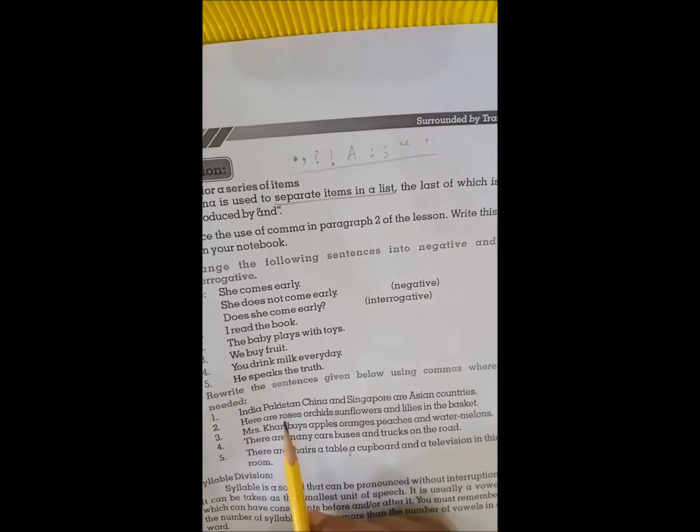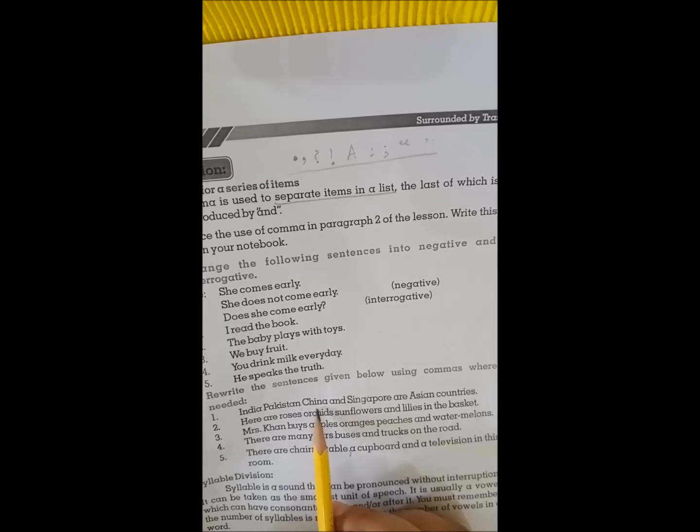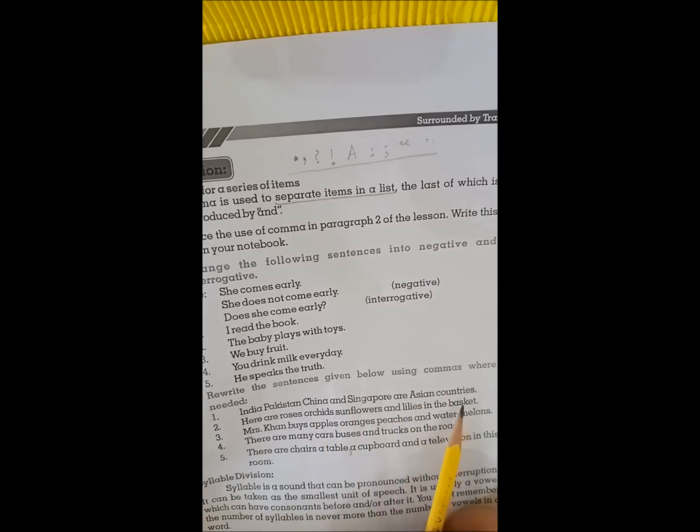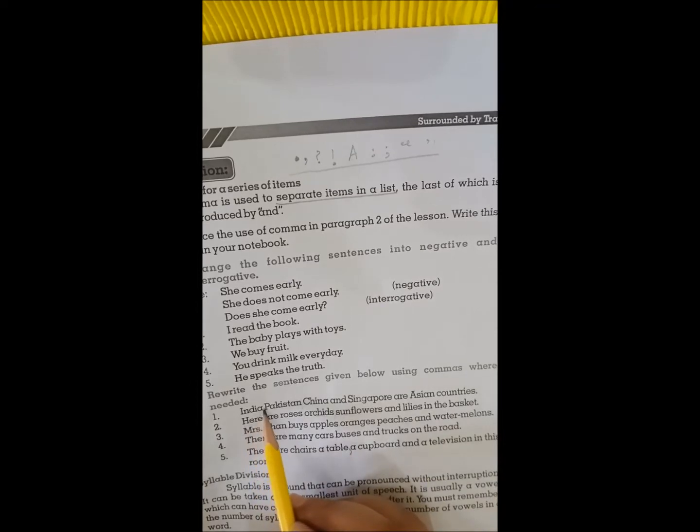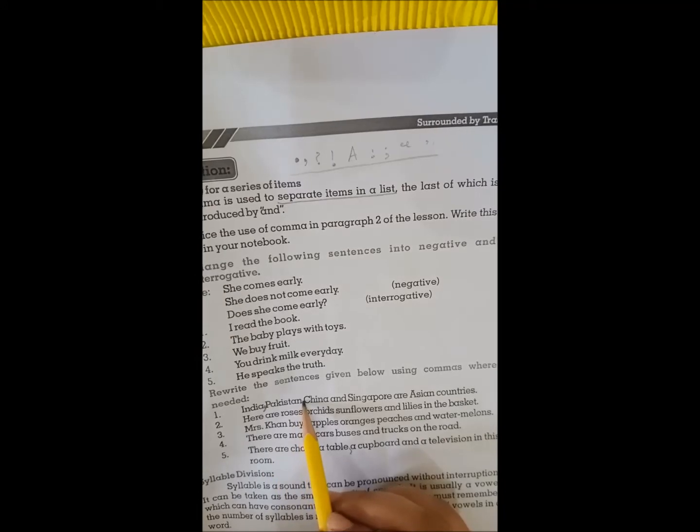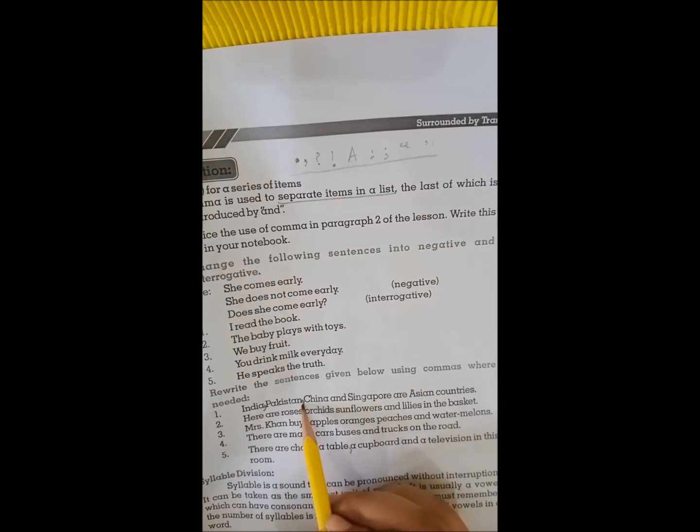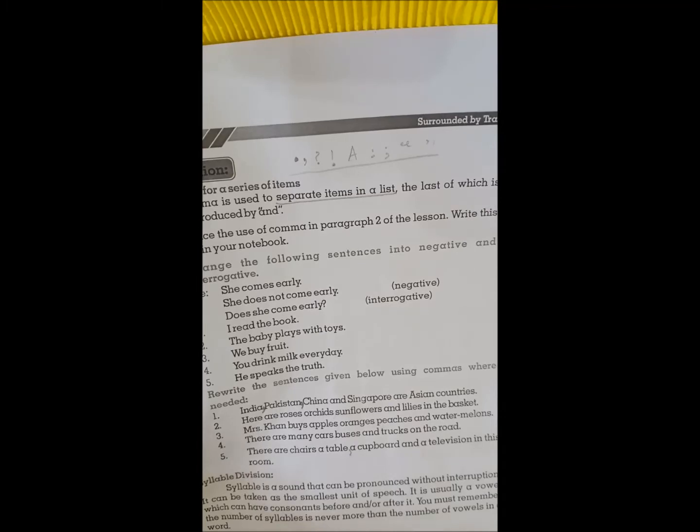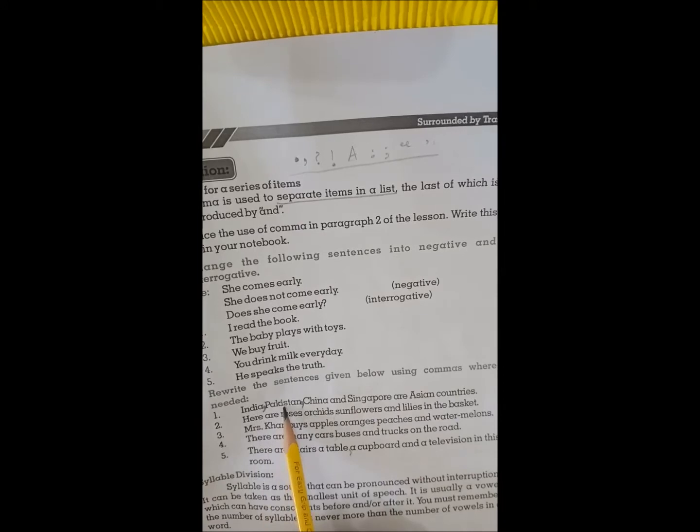India, Pakistan, China and Singapore are Asian countries. We will put comma in between India and Pakistan, and then Pakistan and China. We will not put comma between China and Singapore. India, Pakistan, China and Singapore are Asian countries.